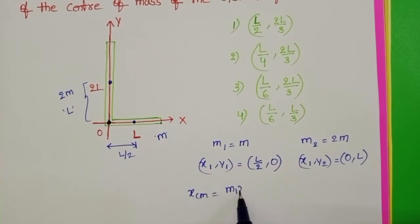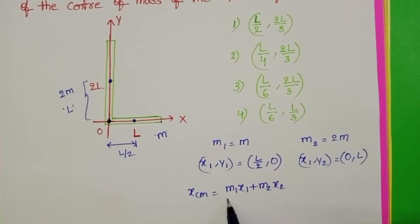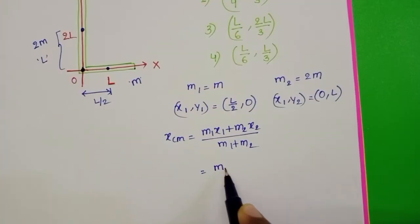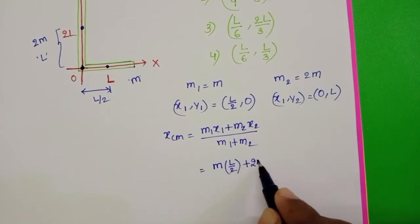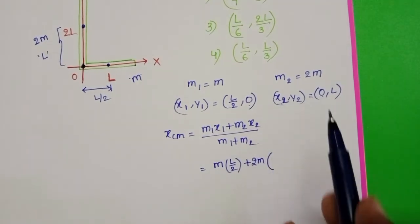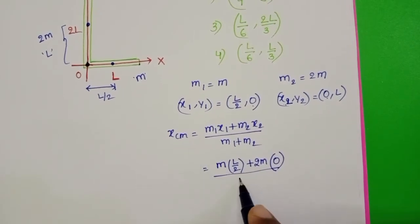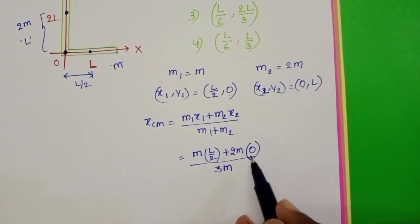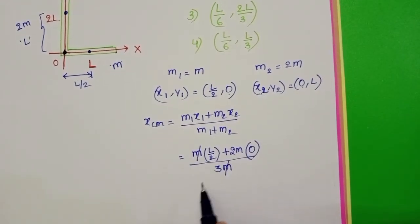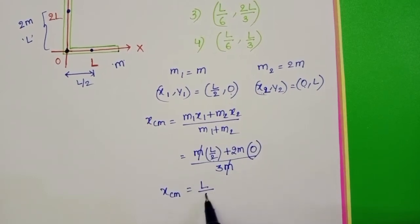Center of mass of the L shape is X_CM equals M1X1 plus M2X2 by M1 plus M2. M1X1 is M times L by 2 plus 2M into X2 equals 0 by total mass M plus 2M that equals 3M. This term is 0 and M gets cancelled. X_CM equals L by 2 into 3 equals L by 6.